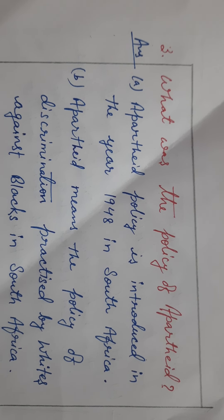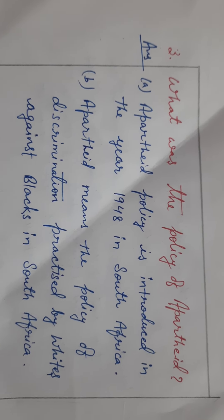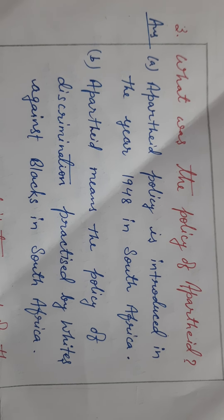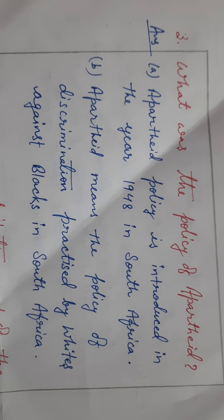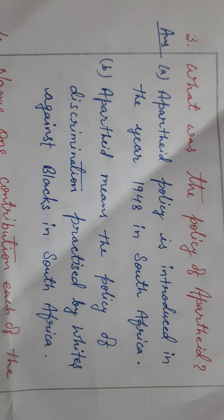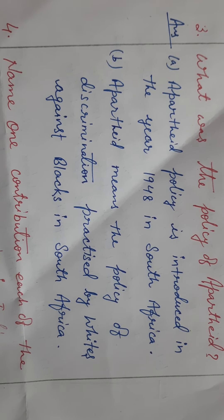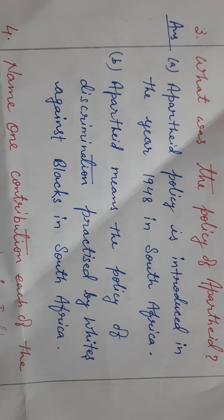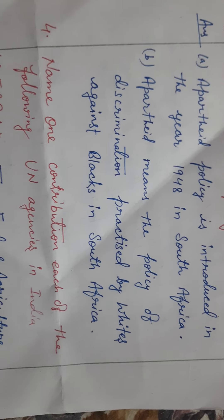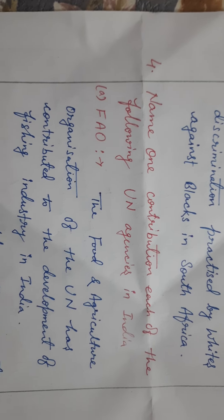Next question: What was the policy of apartheid? The apartheid policy was introduced in the year 1948 in South Africa. Apartheid means the policy of discrimination practiced by whites against blacks in South Africa.